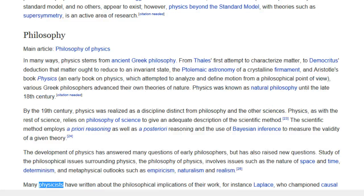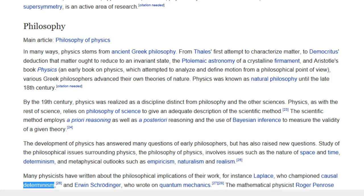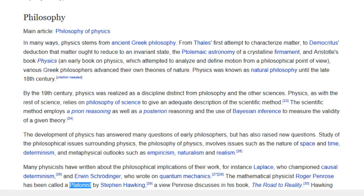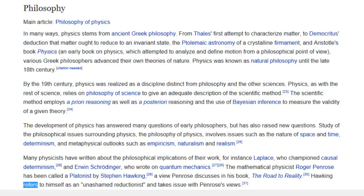The development of physics has answered many questions of early philosophers, but has also raised new questions. Study of the philosophical issues surrounding physics, the philosophy of physics, involves issues such as the nature of space and time, determinism and metaphysical outlooks such as empiricism, naturalism and realism. Many physicists have written about the philosophical implications of their work, for instance Laplace, who championed causal determinism, and Erwin Schrödinger, who wrote on quantum mechanics. The mathematical physicist Roger Penrose has been called a Platonist by Stephen Hawking, a view Penrose discusses in his book, The Road to Reality. Hawking refers to himself as an unashamed reductionist and takes issue with Penrose's views.